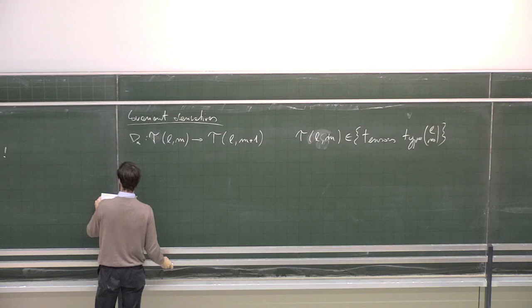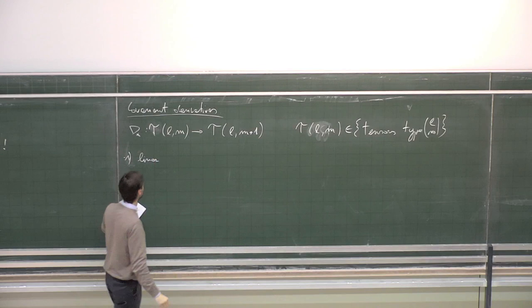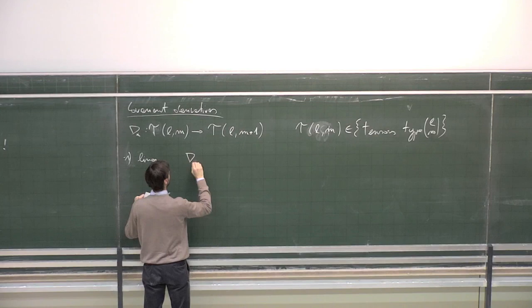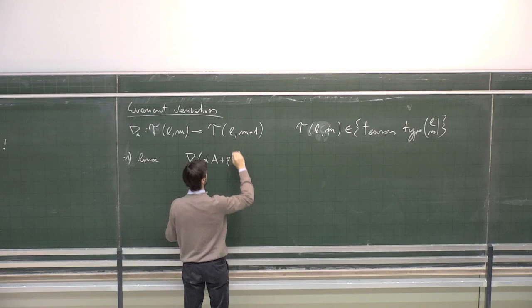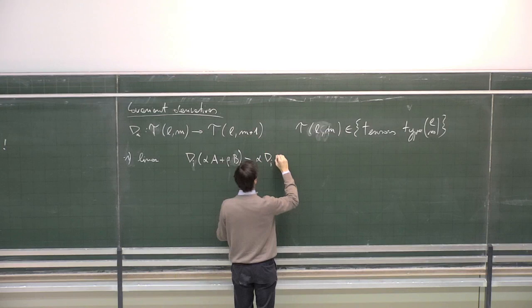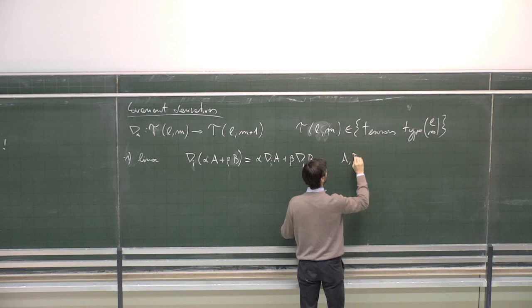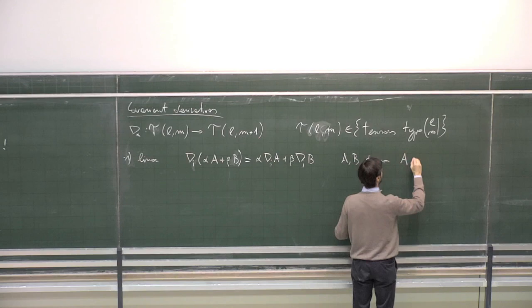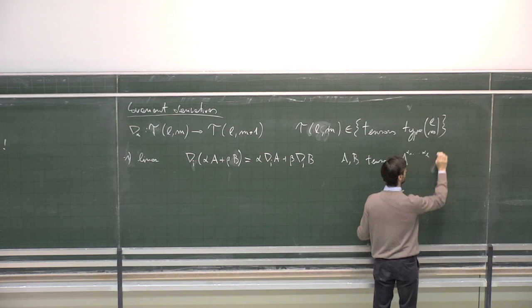What do we want for our derivative? First, it must be linear, because derivatives are linear operators. Therefore, if we take our derivative with respect to some coordinate, applied to the linear combination alpha times A plus beta times B, we want that the derivative of alpha A plus beta B equals alpha times the derivative of A plus beta times the derivative of B, where A and B are tensors of some rank.